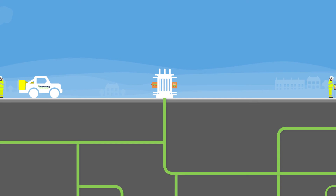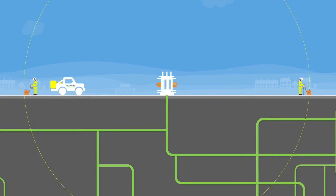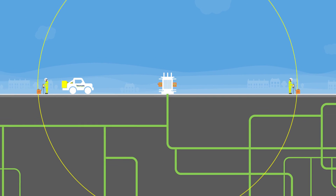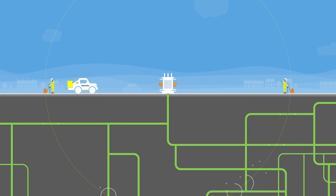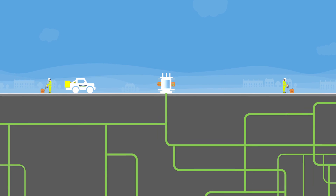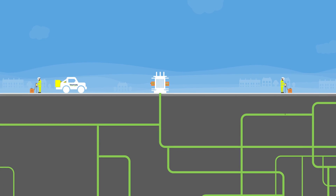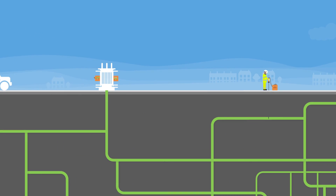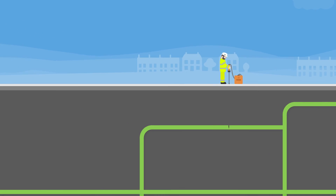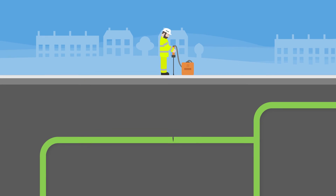When on site, our engineers will use the data collected and cable layout maps to work out possible locations for the fault. They may also do a test to help locate tricky faults when there are multiple possibilities for the location.